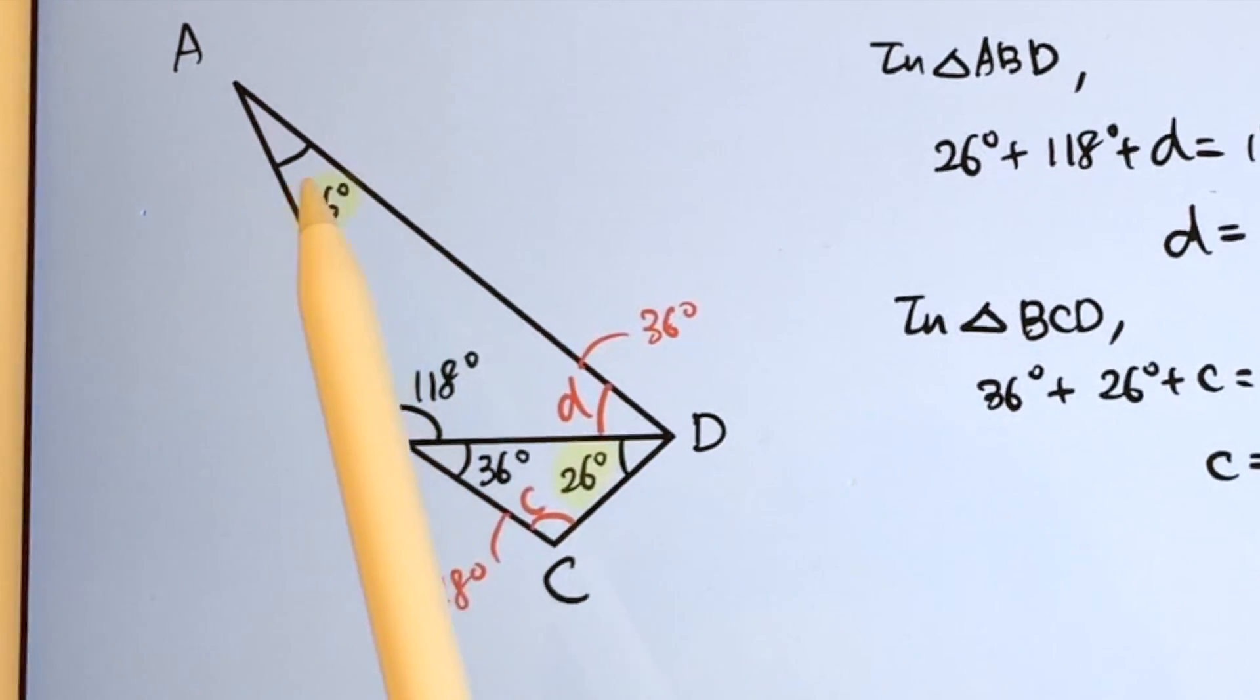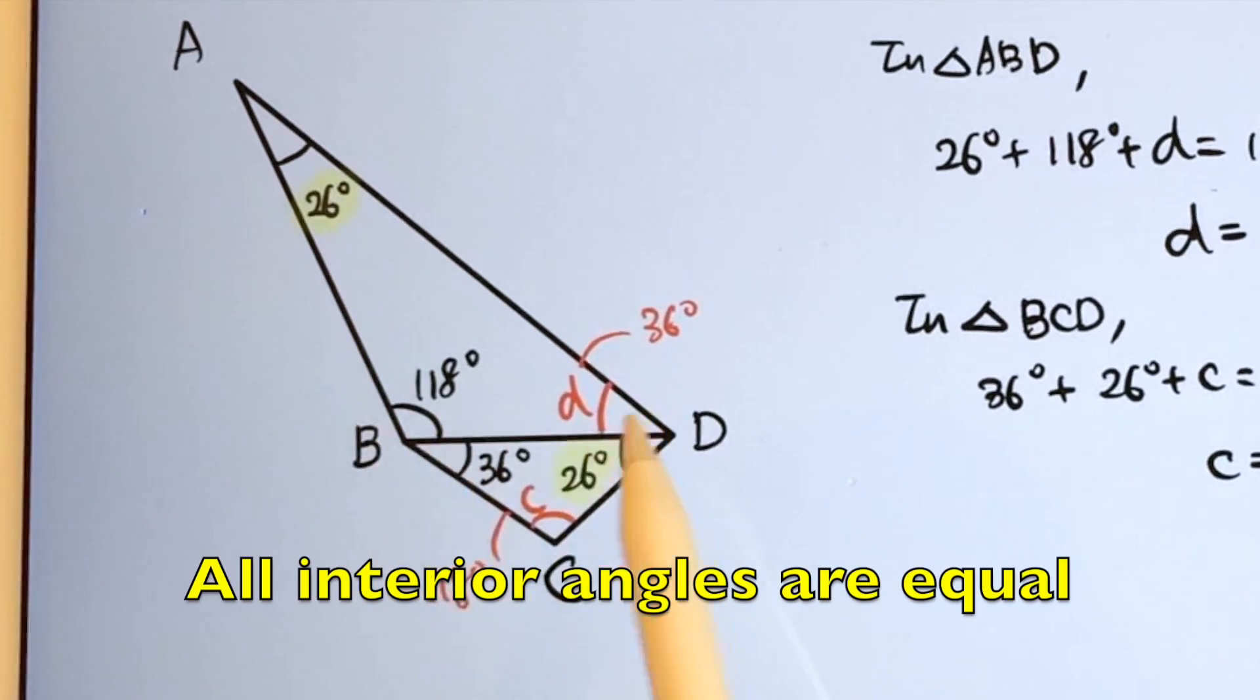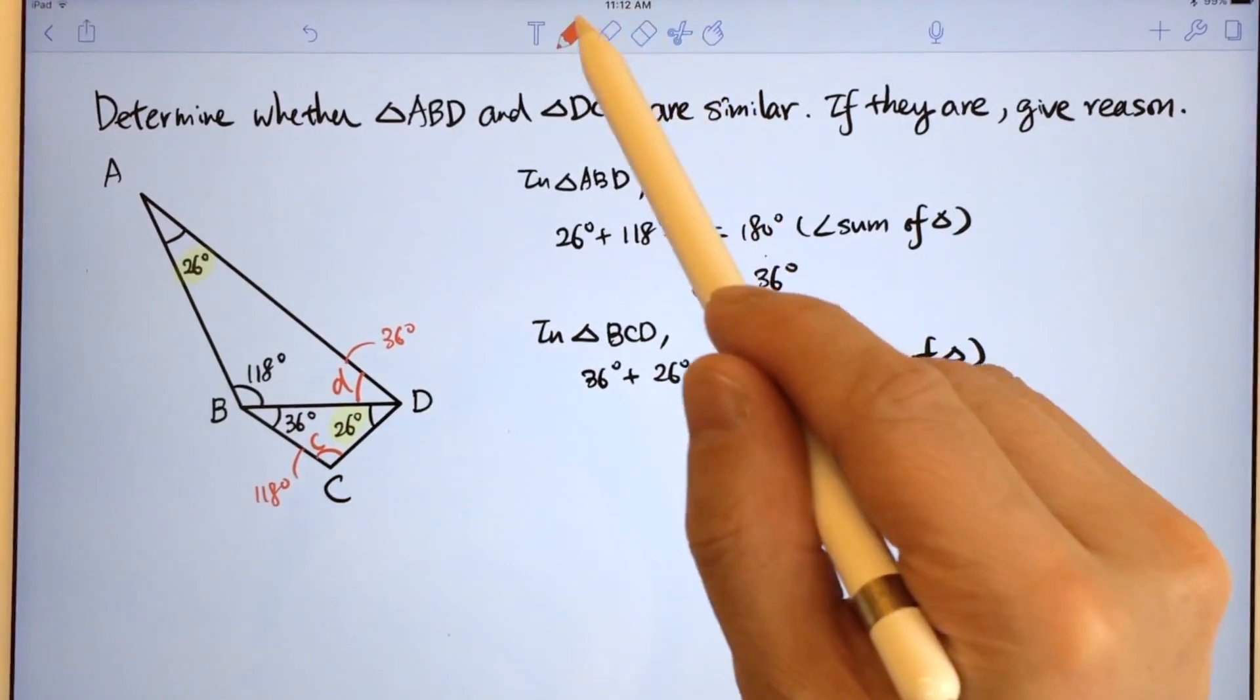Now you can see that these two triangles, all the interior angles are equal and therefore they must be similar.